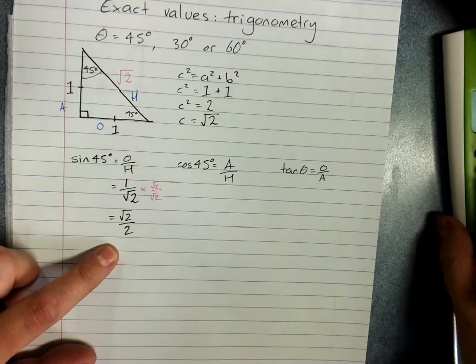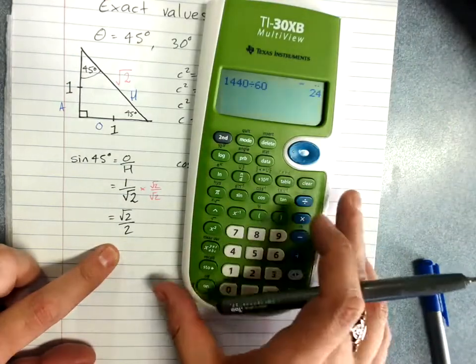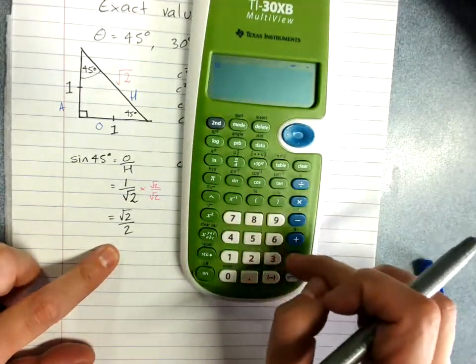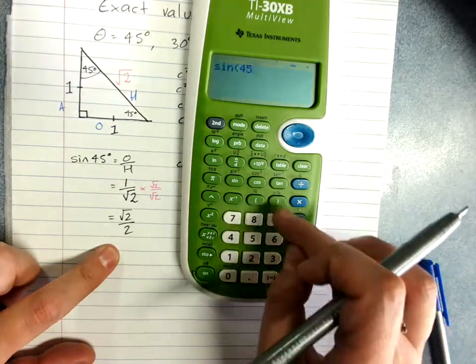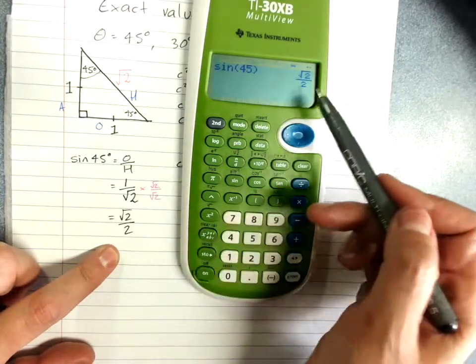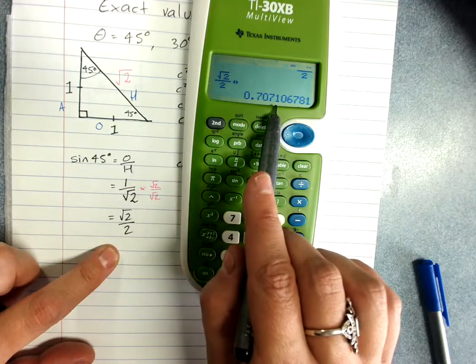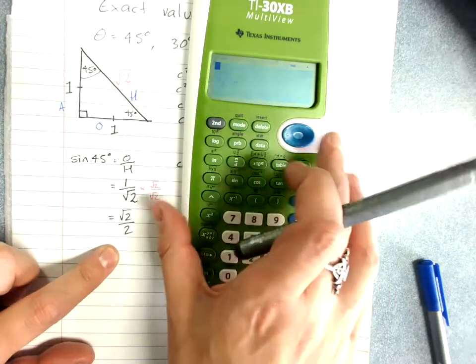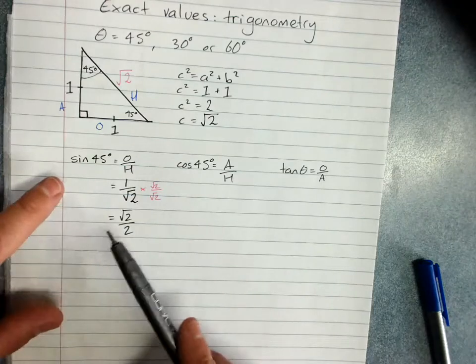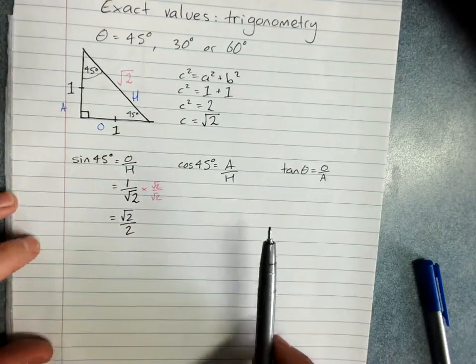And if you wanted to double check, you could do sine of 45. And look, it says root 2 on 2, or there it is as a decimal.